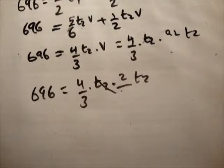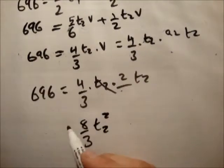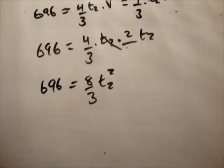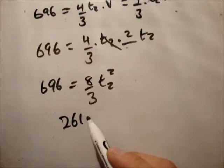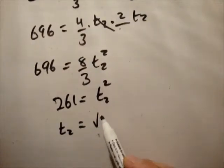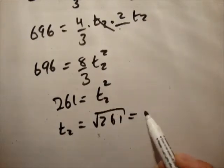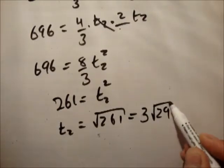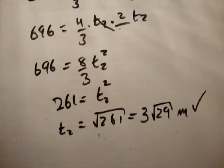So we're going to get 8 over 3 t2 squared is equal to 696. Therefore 3 times 696 divided by 8 is equal to 261. Therefore t2 is equal to root 261 is equal to 3 root 29 meters. And I'll tell you that's correct.